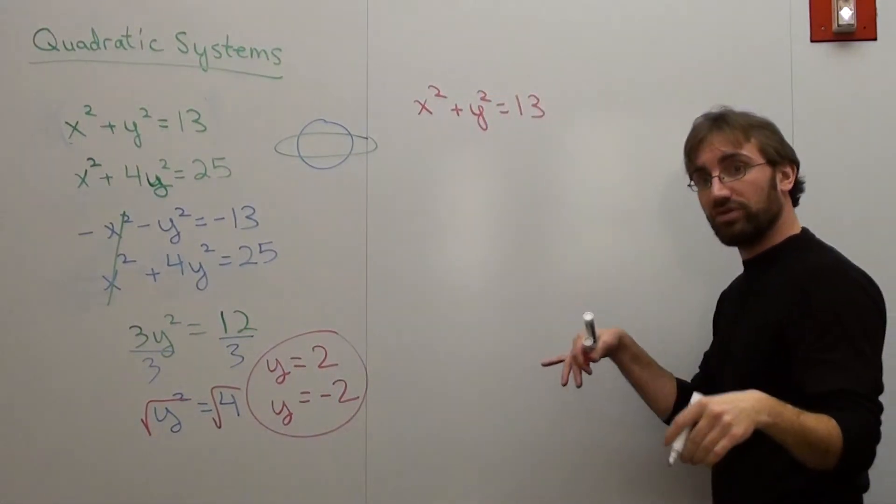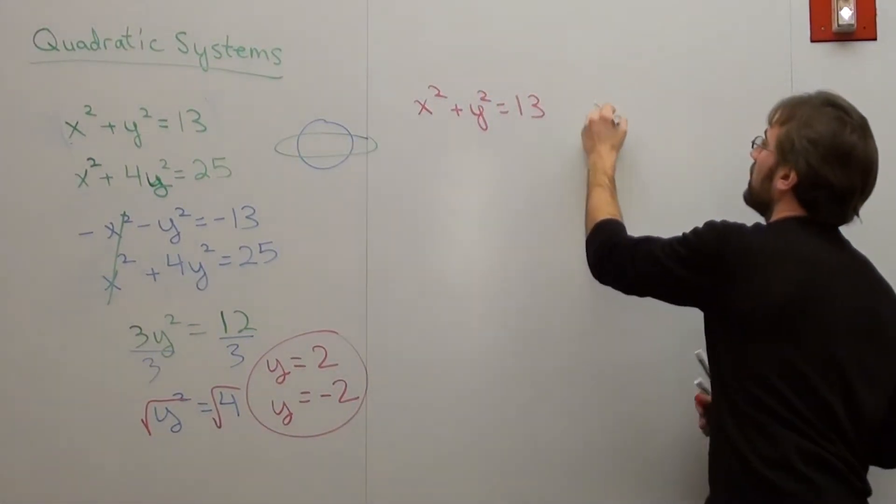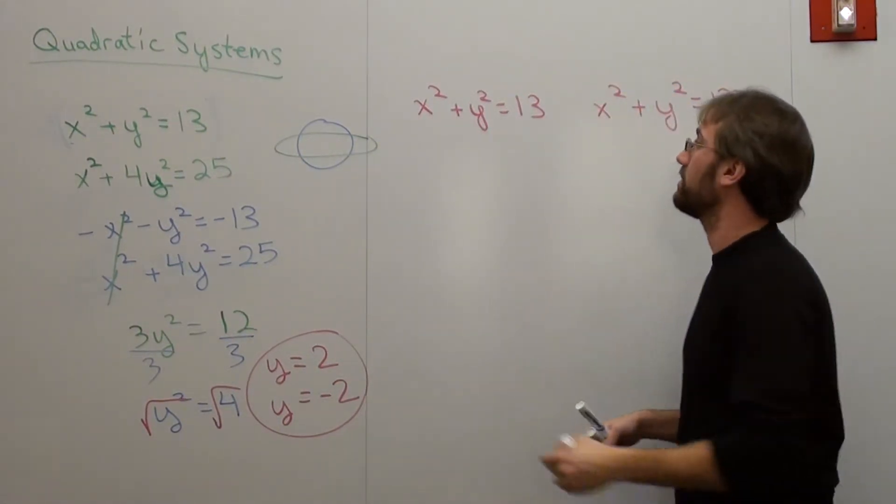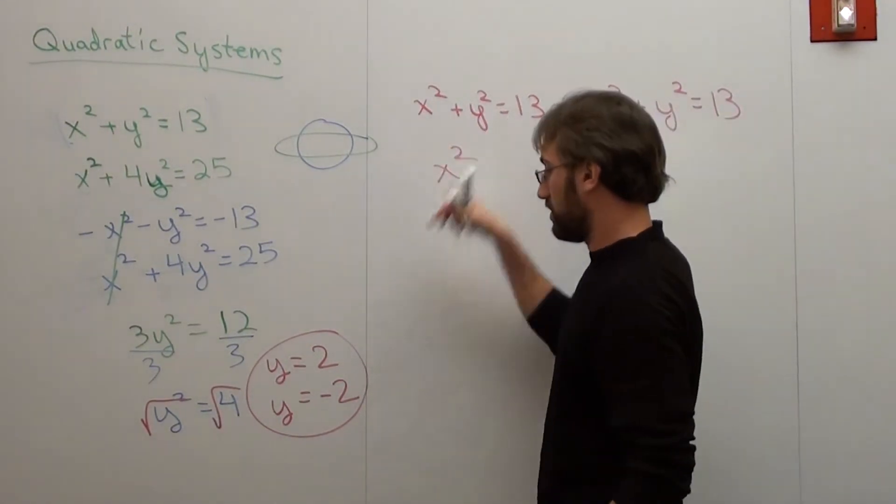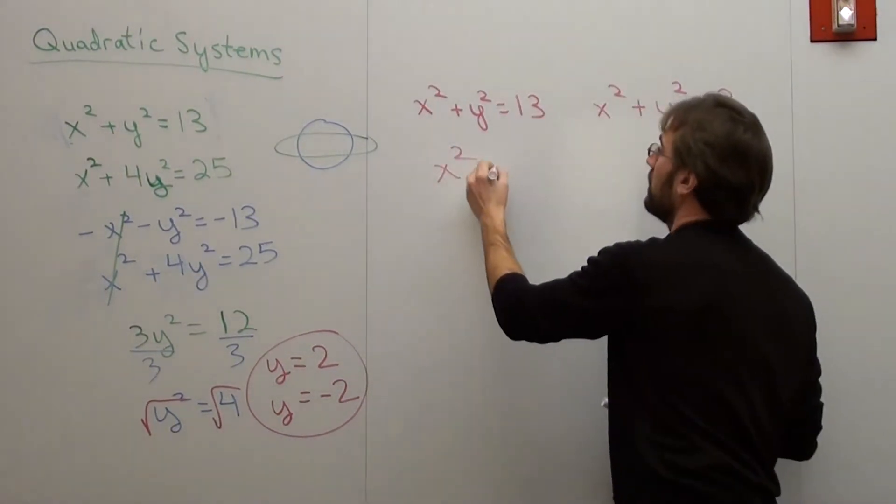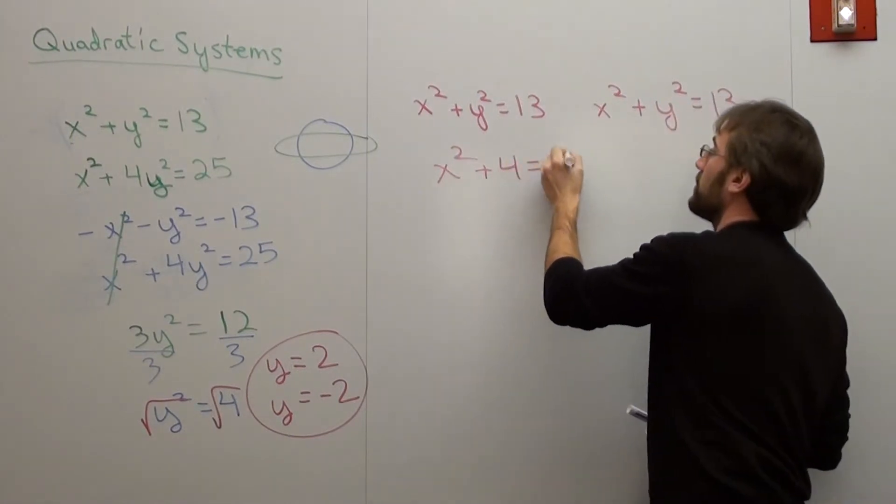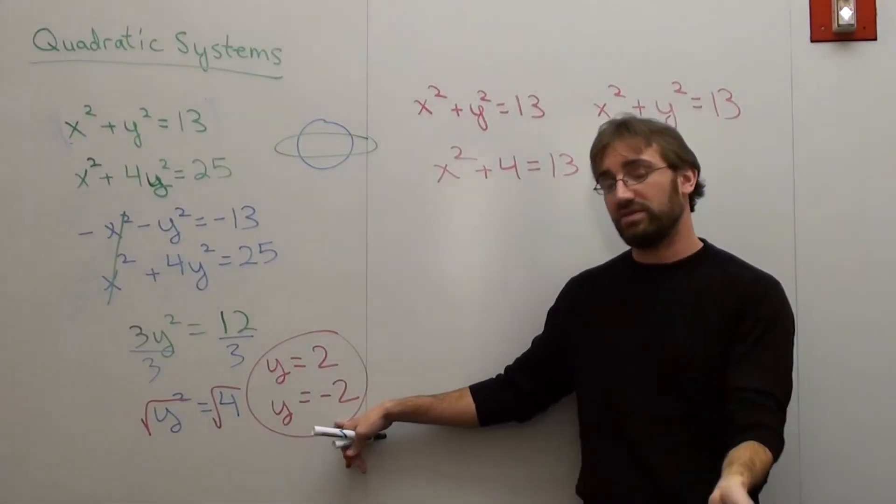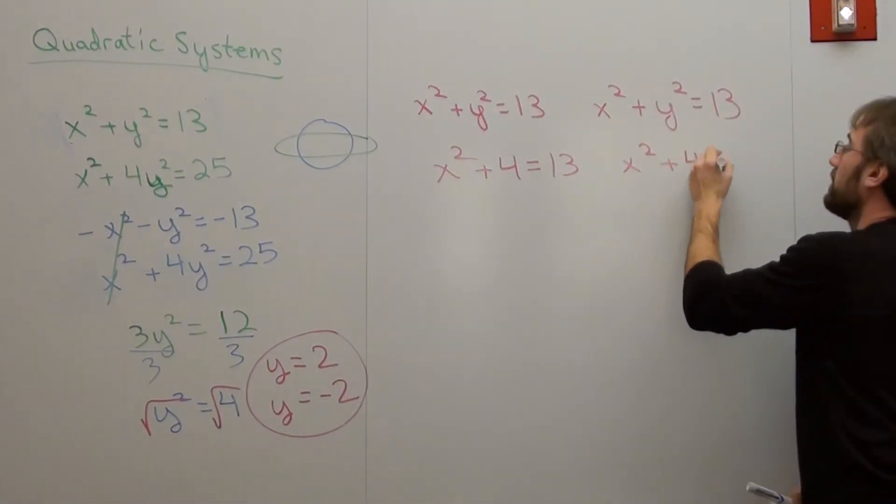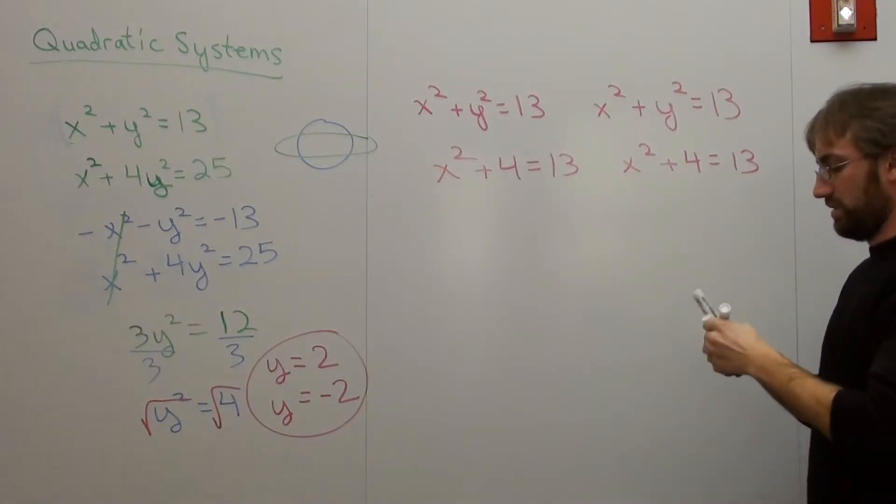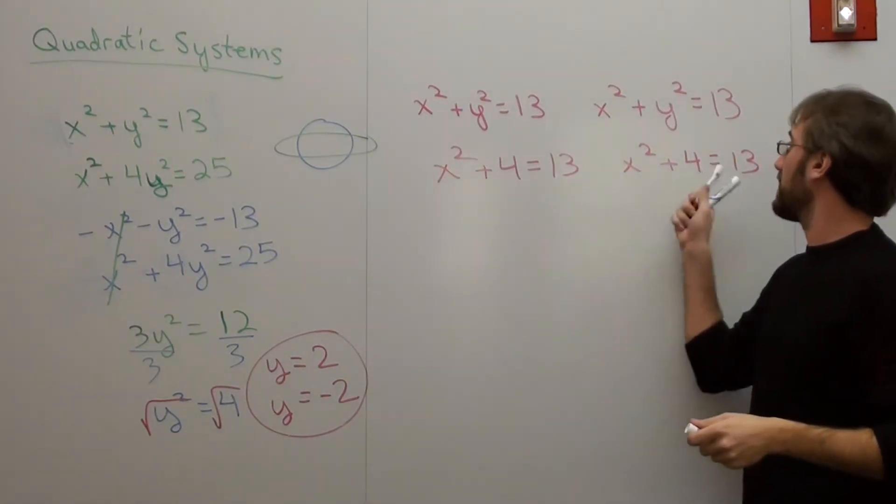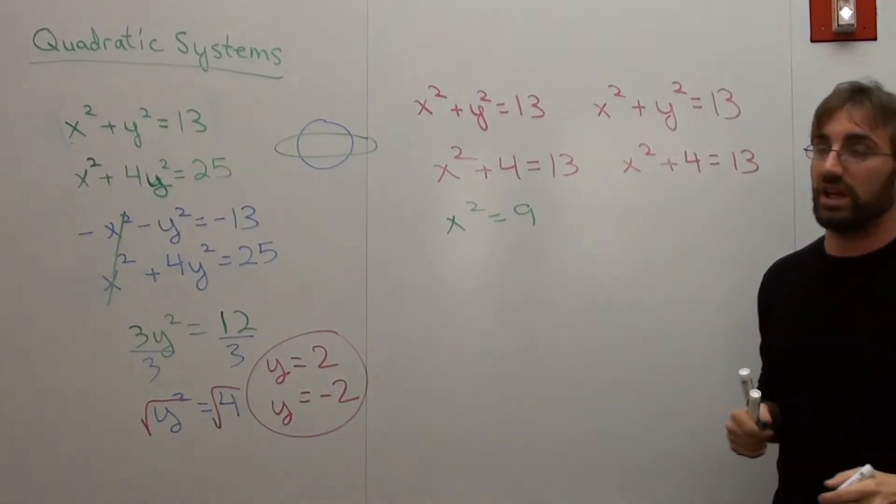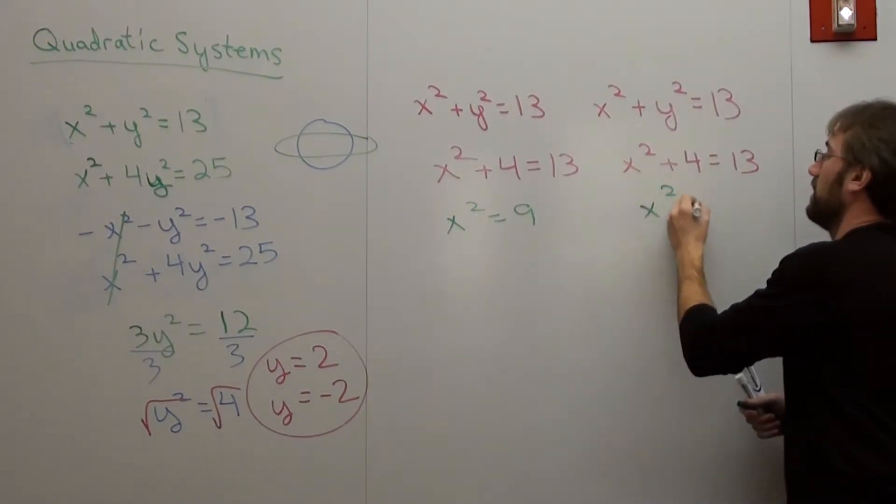So when I substitute that in, I'm going to do it for two different cases because there's two different y values. So I've got x squared plus 2 squared is 4, equals 13. And x squared plus negative 2 times negative 2 is 4, equals 13. Subtract 4 on both sides. Subtract 4 on both sides. Subtract 4 on both sides. x squared equals 9. x squared equals 9.